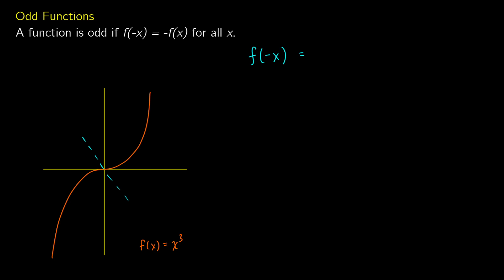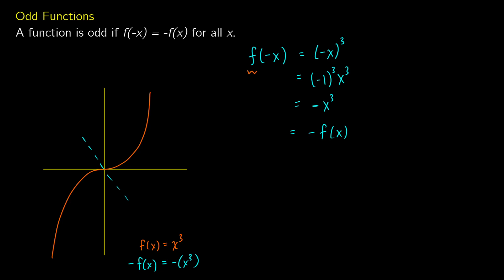If f of x is x cubed, then negative f of x is just negative x cubed. Starting with f of negative x, we replace x with negative x, giving us negative x to the 3rd. We can think of this as negative 1 cubed times x cubed. Negative 1 times negative 1 times negative 1 gives us negative 1, so we get negative x cubed. This is the same as negative f of x, so because f of negative x equals negative f of x, this is an odd function.